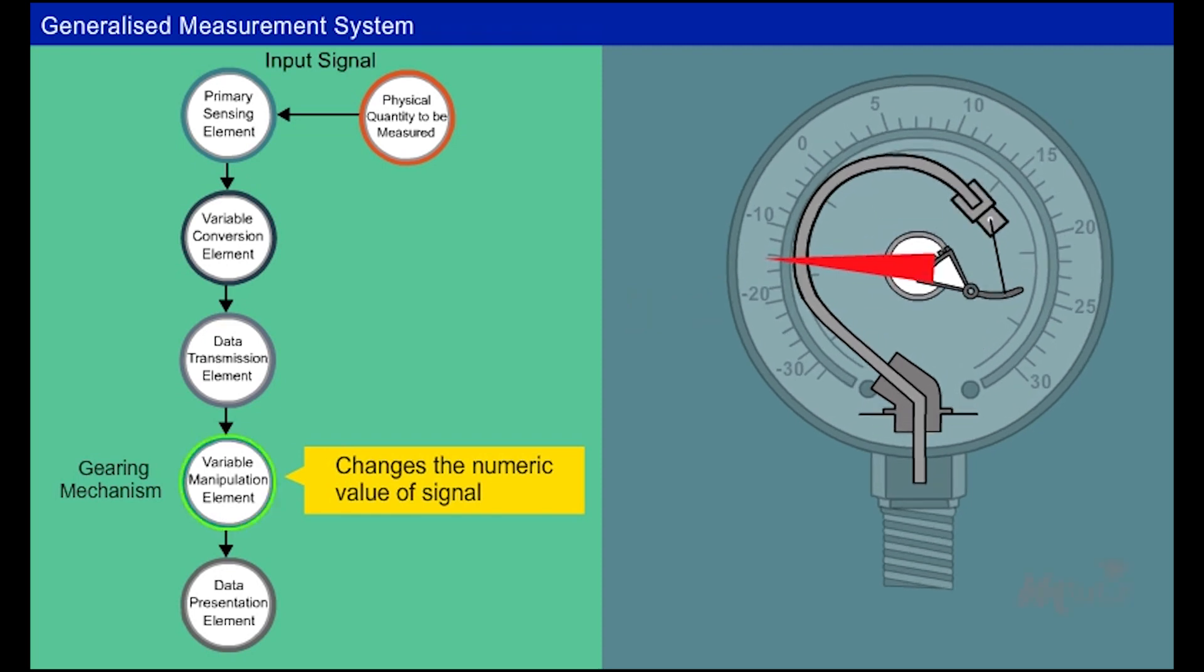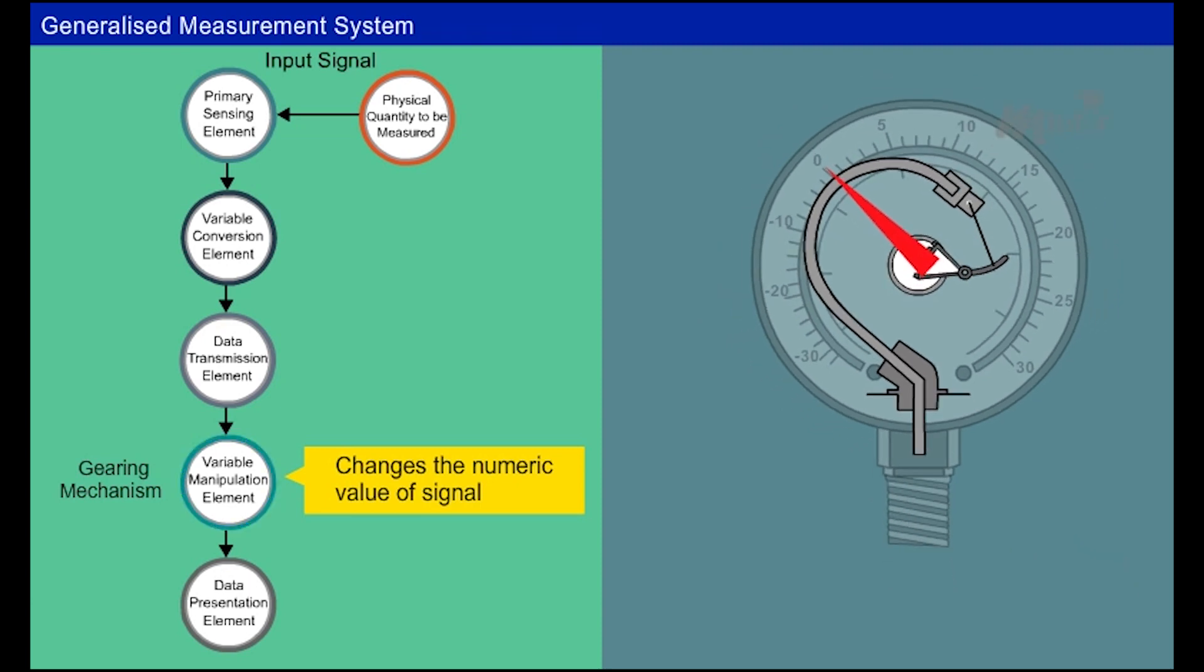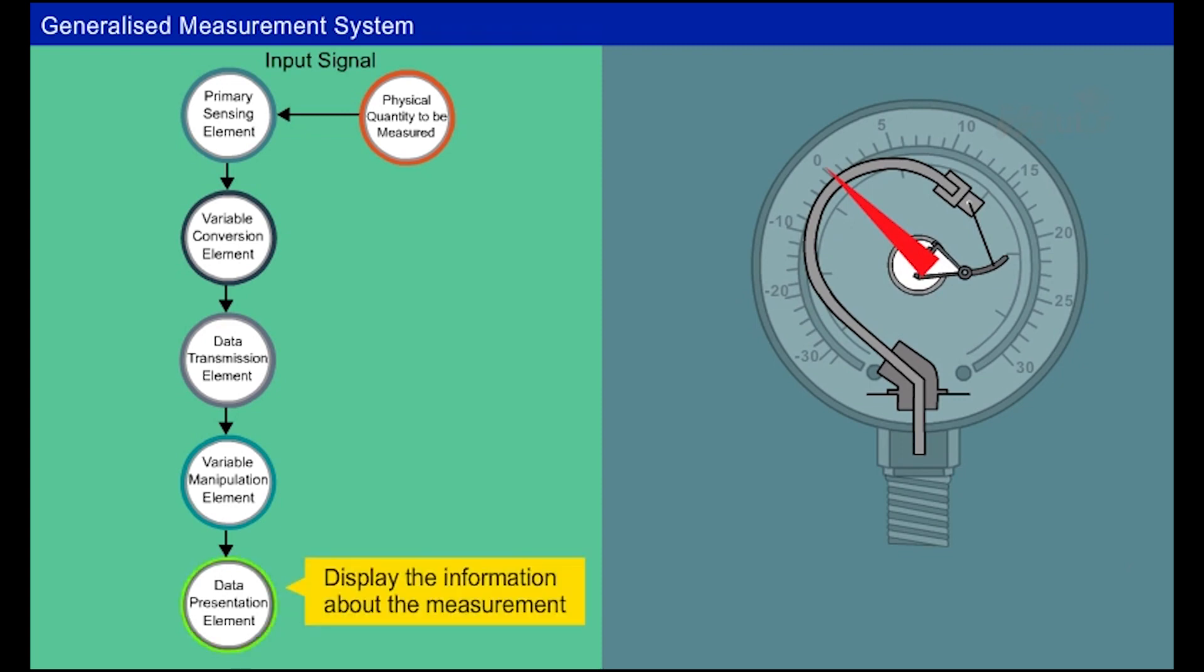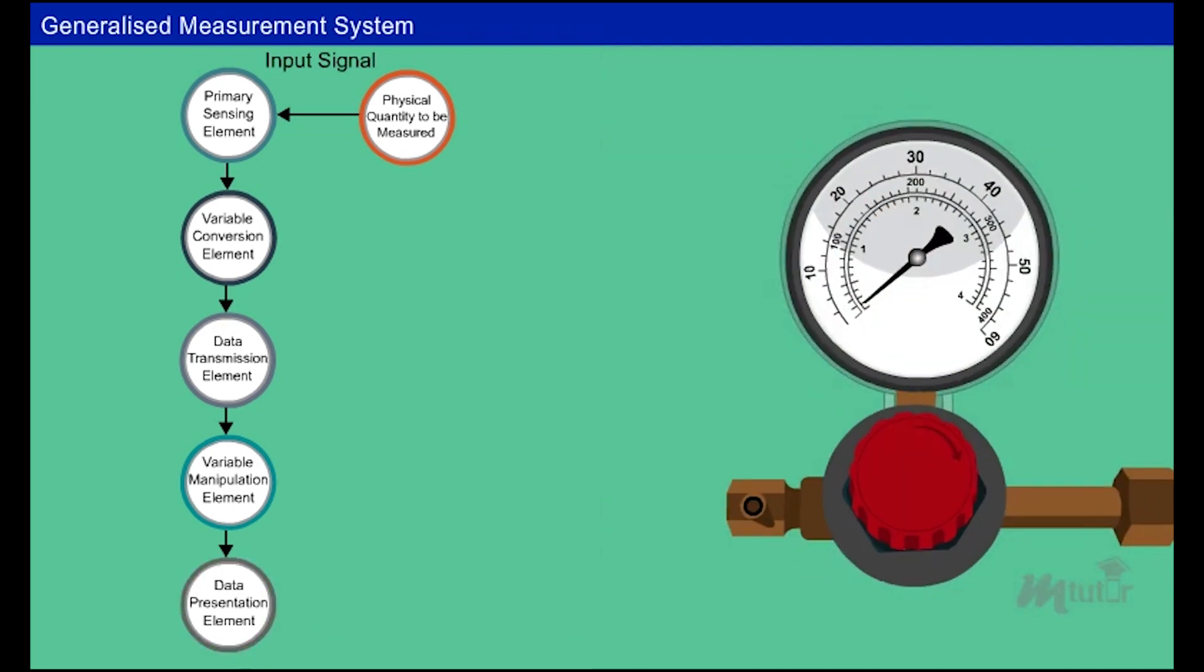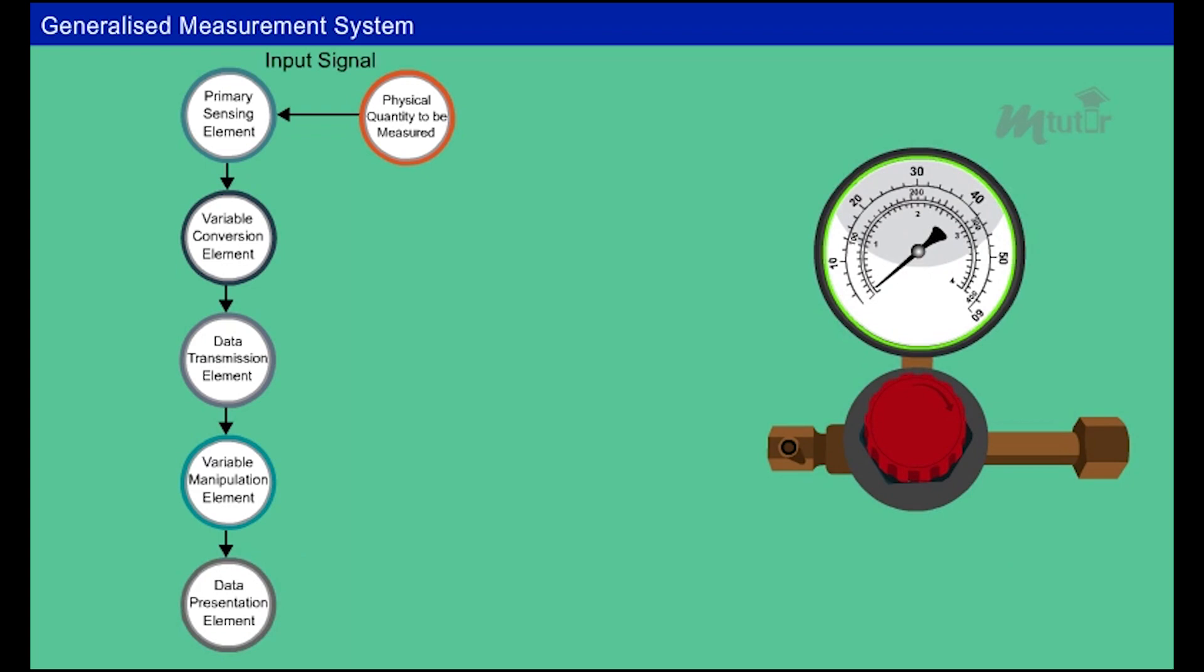The display devices show the information about the measurement to the observer from the data presentation element. Here, the pointer and the dial arrangement gives an indication of the pressure signal applied to the Borden tube. This is how the general measurement system works.